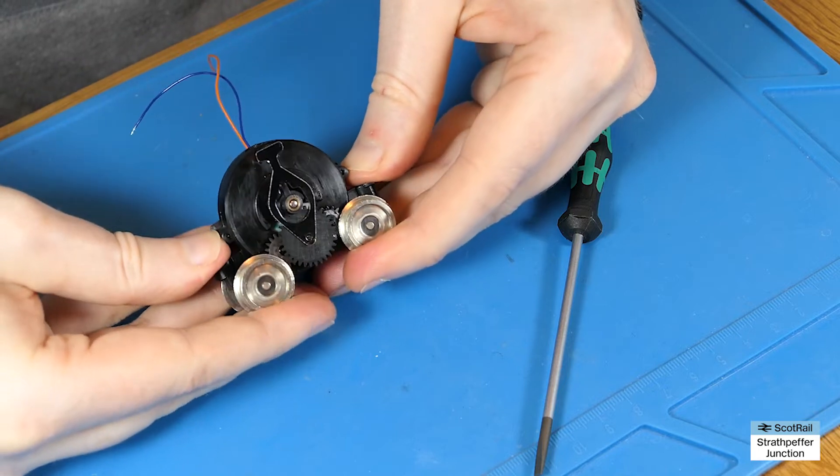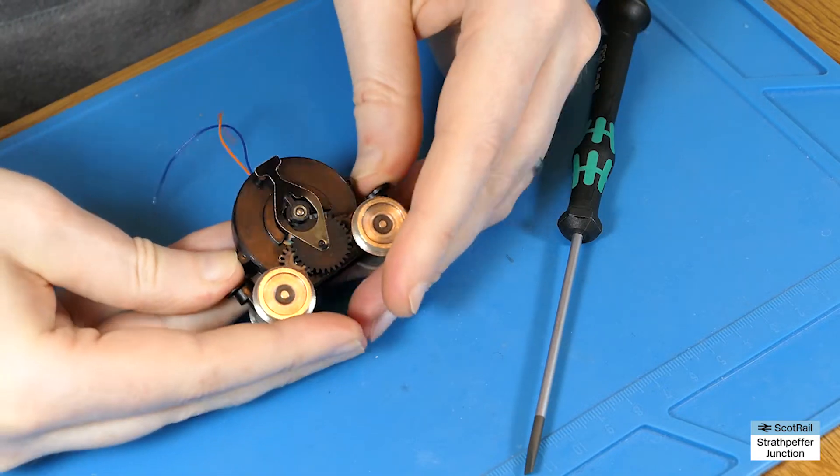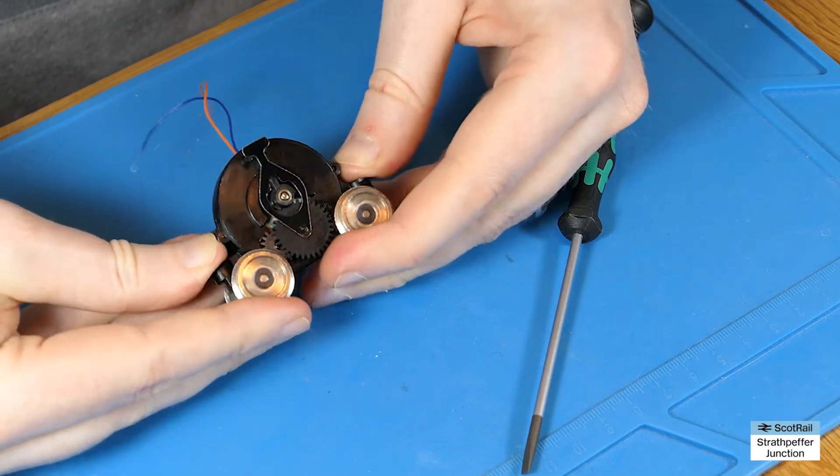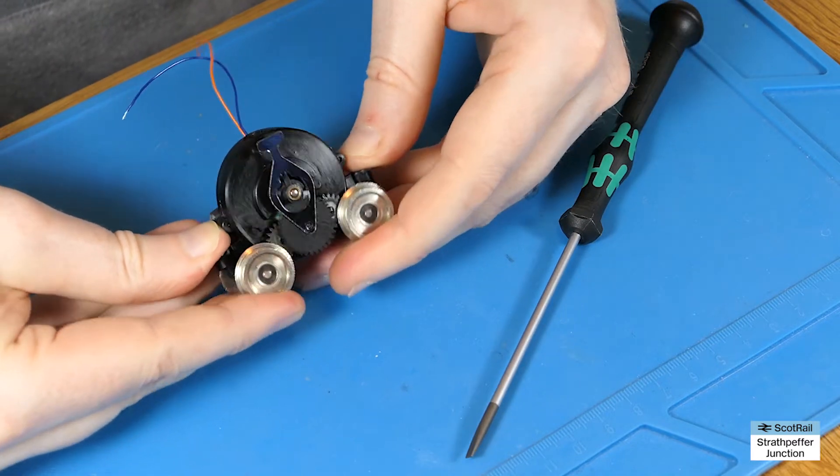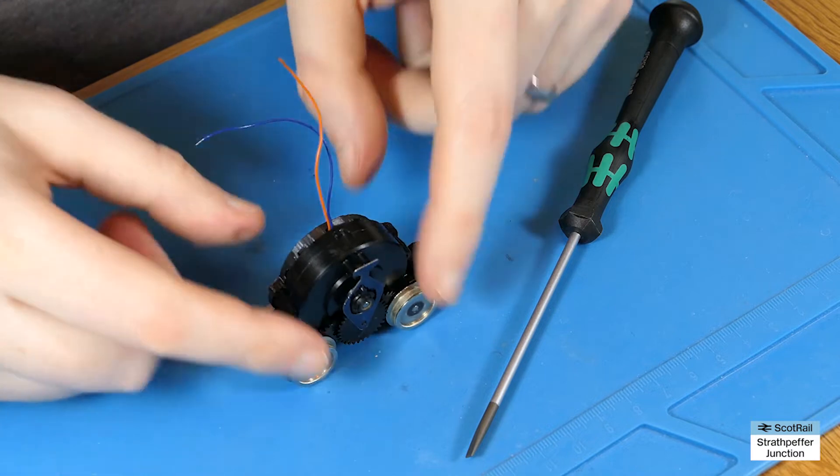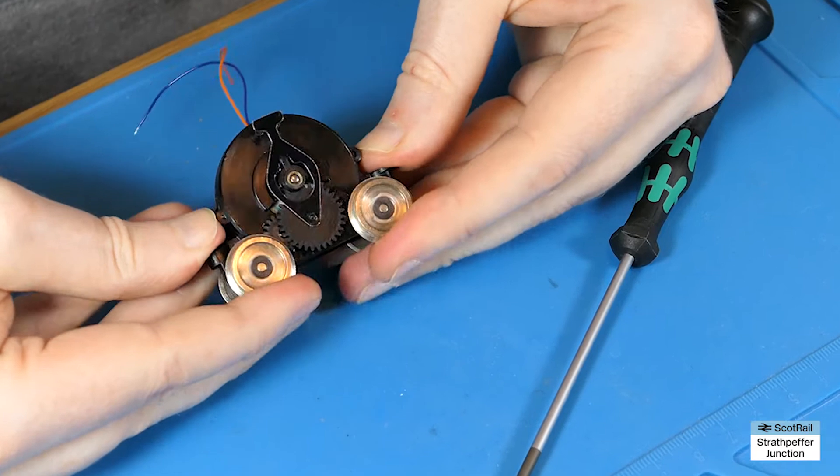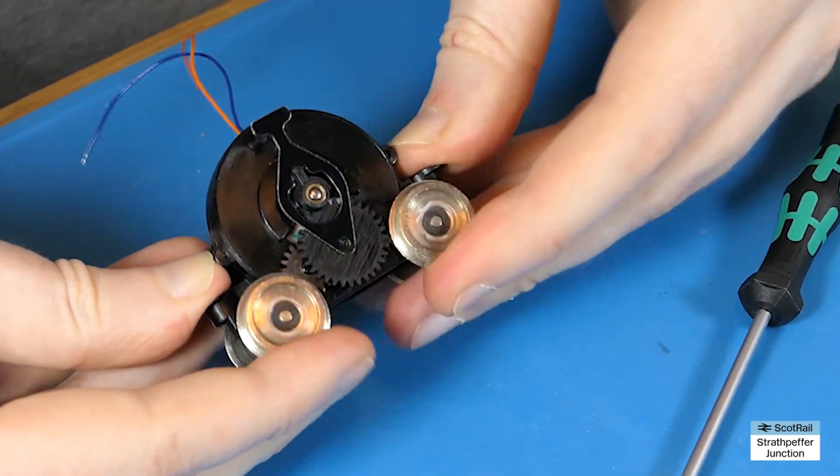They move just very slightly with quite a lot of pressure. There's certainly no way that your DCC decoder or the motor is going to manage to turn these for any long period of time without the motor giving out.